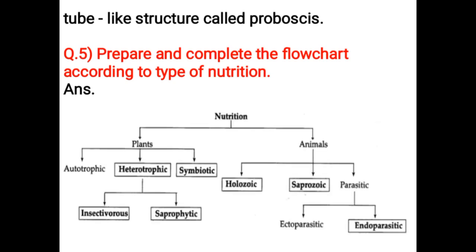Plants and animals: Plants are divided into Autotrophic, Heterotrophic and Symbiotic. Animals are divided into Olozoic, Saprophytic and Parasitic. Heterotrophic is divided into two types: Insectivorous and Saprophytic. Parasitic is divided into two types: Ectoparasitic and Endoparasitic.